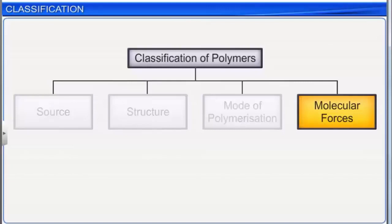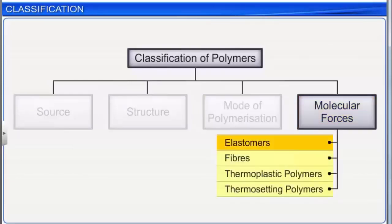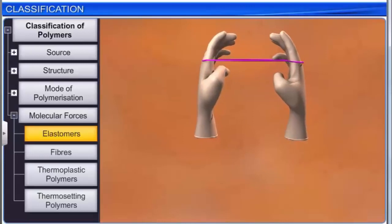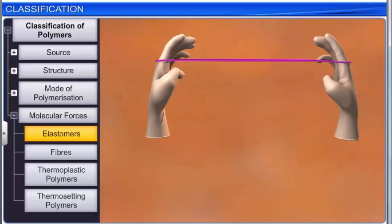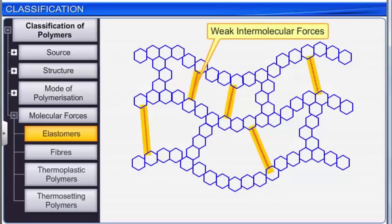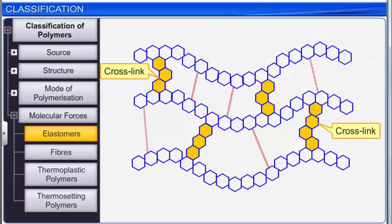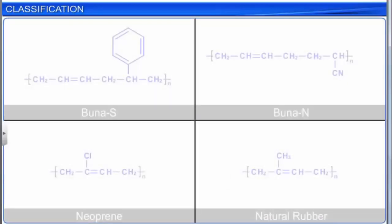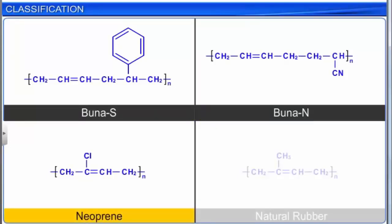Based on the molecular forces present in them, polymers are classified into four types: elastomers, fibers, thermoplastic polymers, and thermosetting polymers. Elastomers are rubber-like solids with elastic properties — an elastomer can be stretched to many times its original length and snaps back when the external force is released. The polymer chains in elastomers are held together by very weak intermolecular forces, and there may be a few cross-links between chains. Many elastomers are copolymers. Examples are Buna-S, Buna-N, Neoprene, and Natural Rubber.